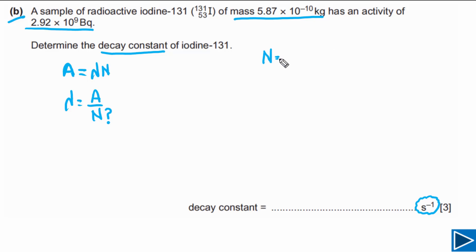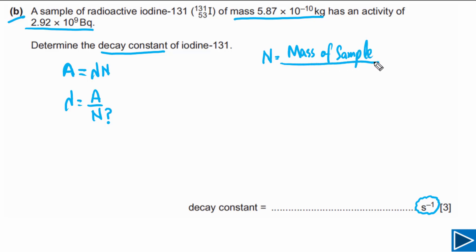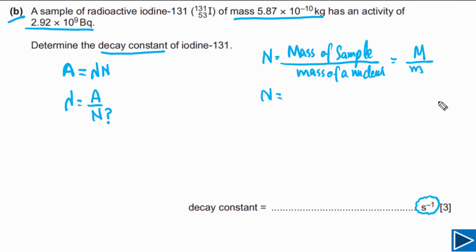How do we calculate the number of nuclei? Try it yourself first, then check my solution. The number of nuclei can be calculated by dividing the total mass of the sample by the mass of a single nucleus. Let capital M be the mass of the sample and small m be the mass of one nucleus. The problem then is: how do we find the mass of one nucleus?